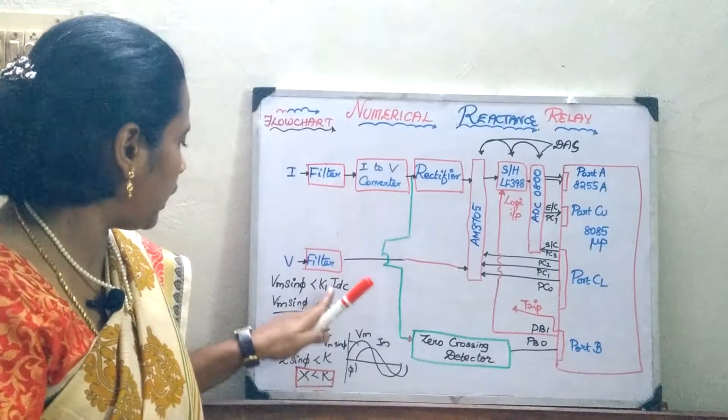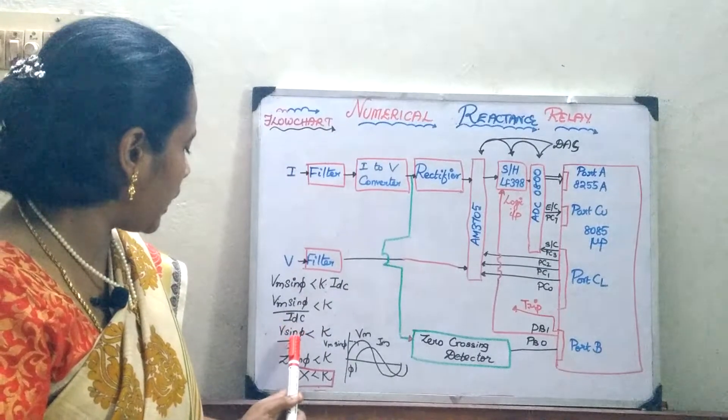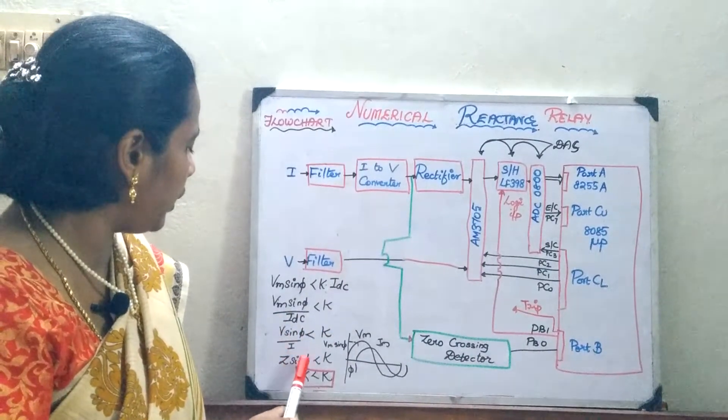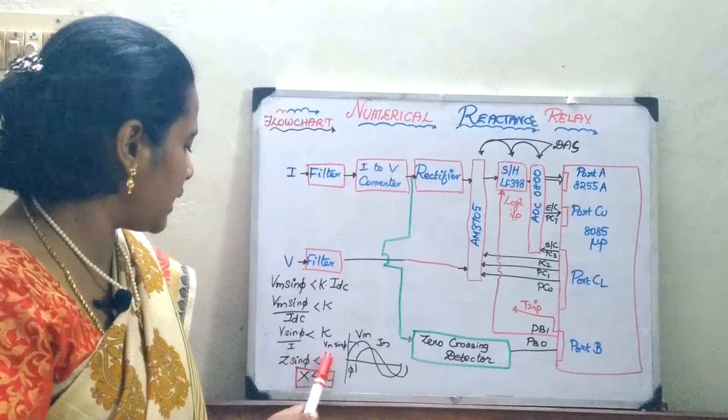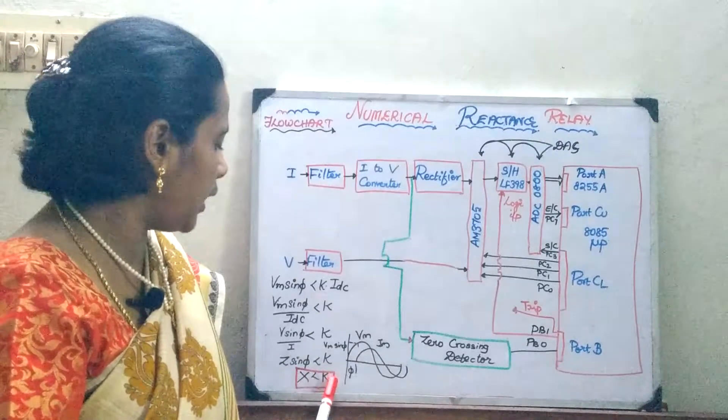Now V into sin phi by I is less than K or else you can say V by I is Z, impedance into sin phi is less than K. So, the sin phi component is nothing but your reactance. If this reactance is going to be less than K, then the relay will operate.